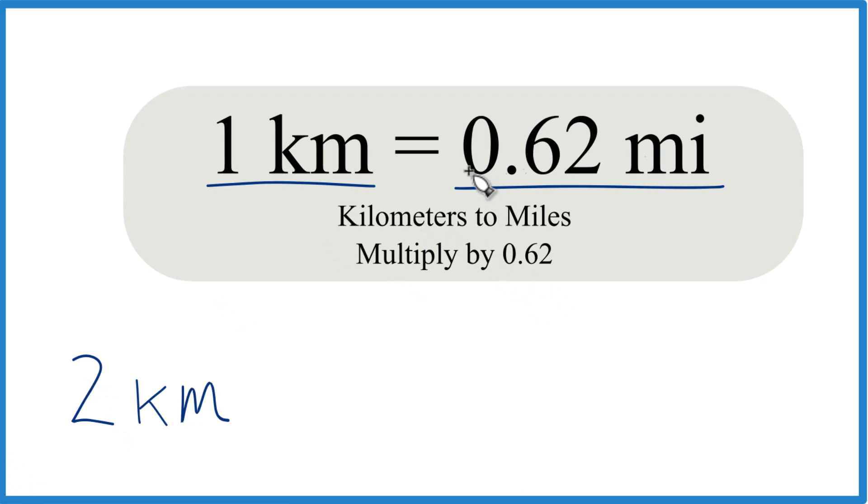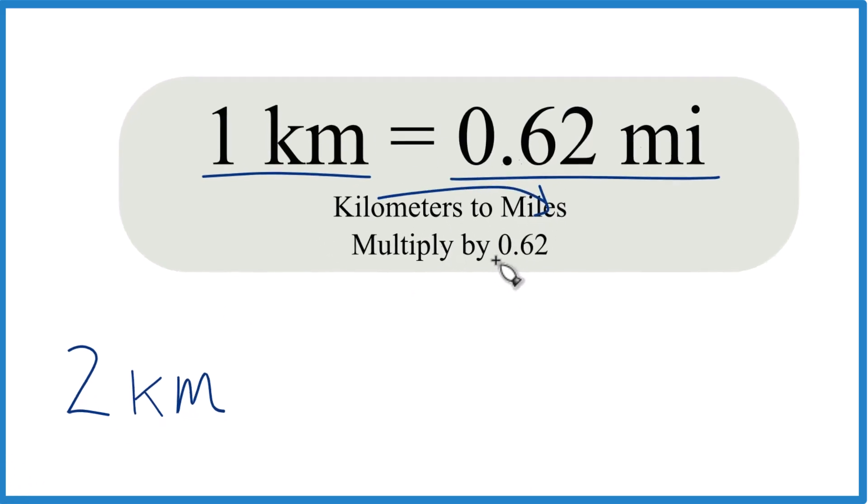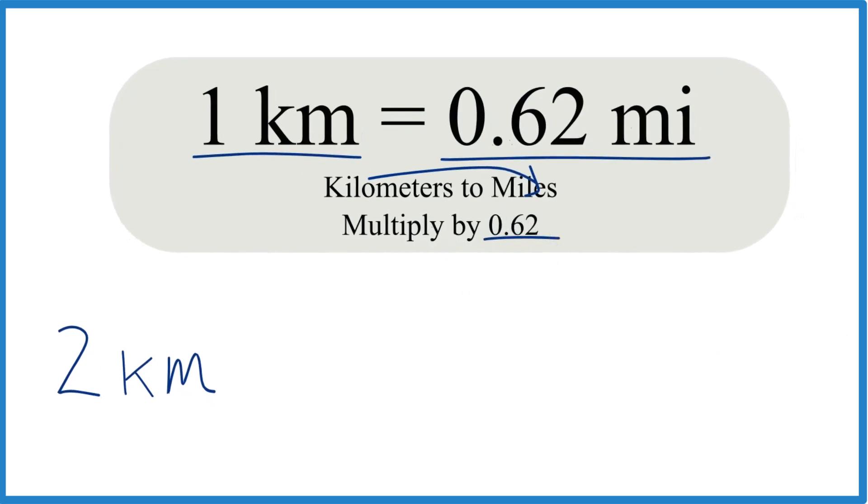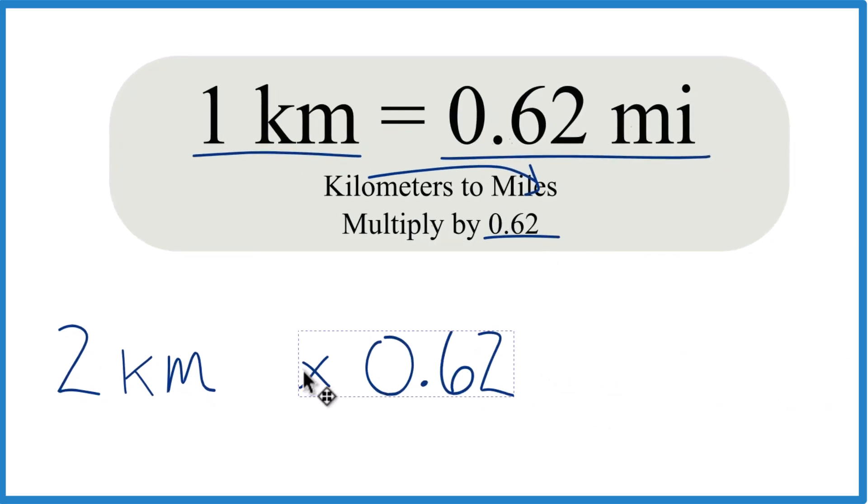But we're going from 2 kilometers and we're going from kilometers to miles. Kilometers to miles, we're going to multiply by 0.62. So we take our 2 kilometers, we multiply that by 0.62.